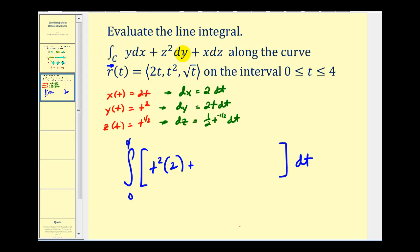Plus z squared times dy. Well, z squared would be t to the one-half squared—that's going to be t times differential y. Differential y is 2t dt. Again, the dt is already here so we'll write down the 2t. And lastly we have x dz. Well, x equals 2t, and dz equals one-half t to the negative one-half dt.